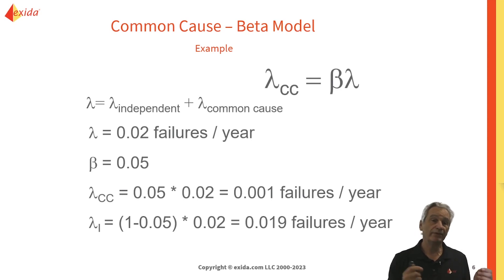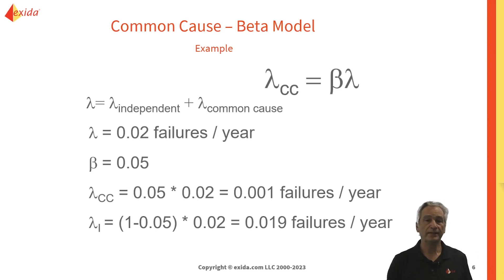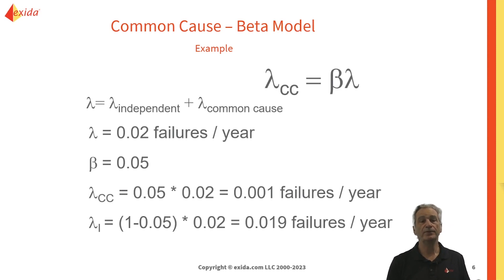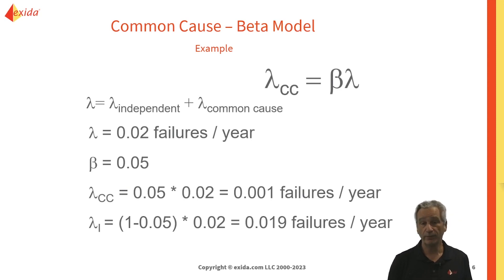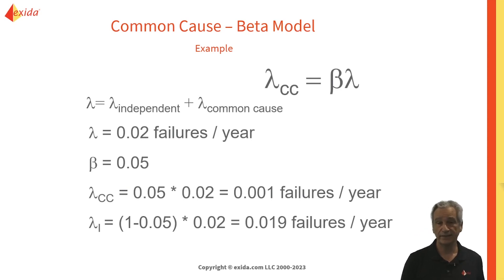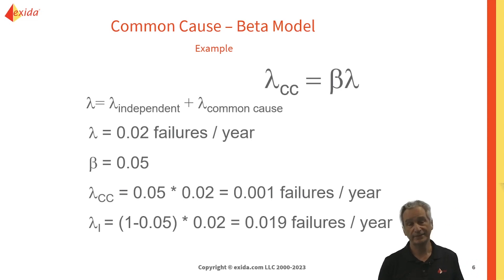To calculate the independent portion, we use the complement rule: 1 minus beta times lambda gives us our independent portion, which would be 0.019. Now if we've done our math correctly, when we add the independent and the common cause failure rates back together, we should get back to our original failure rate. So if we add 0.001 to 0.019, we get back to 0.02. That's a way of doing a sanity check to see whether we've calculated our independent portion correctly.